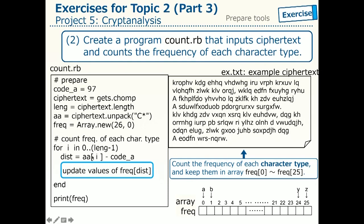Then the actual frequency counting will be done in this for loop. Here, by changing the index i from 0 to length minus 1, we check the i-th character in the ciphertext, or more precisely speaking, its code AA of i and its distance from the letter a, and update the value of the array FREQ.